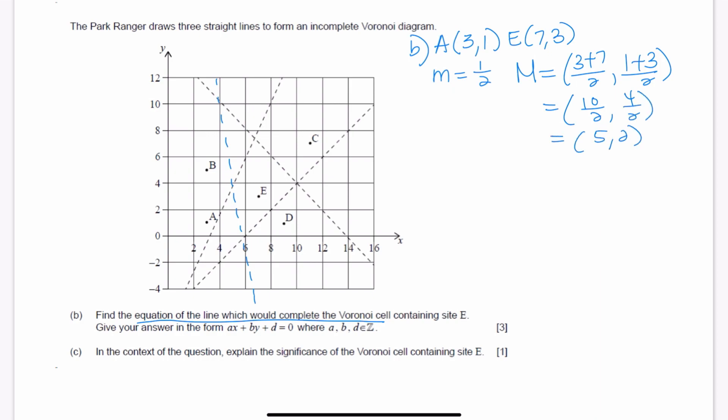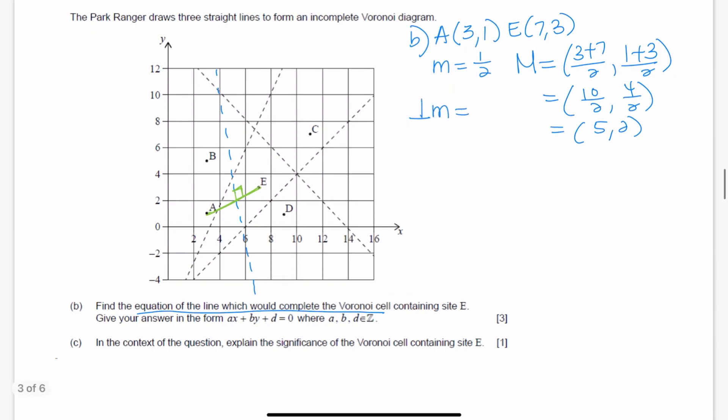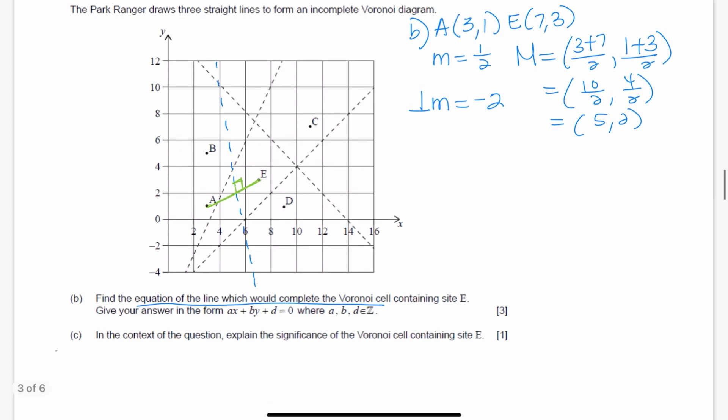But remember that we don't want the slope of A, E. Instead, we want the negative reciprocal because we want the slope of the line that is perpendicular to A, E. So the perpendicular slope, instead of 1 over 2, it's going to be 2 over 1. And instead of positive, it's going to be negative. So now we have to figure out the equation of the line using the perpendicular slope and the midpoint.